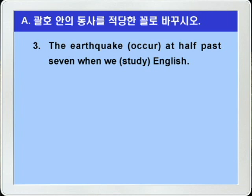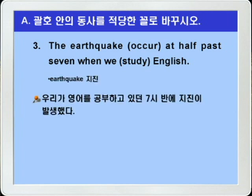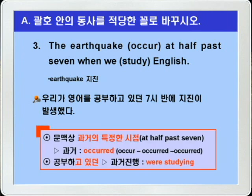3번은 문맥을 따져보고 동사 시제를 정하는 문제가 되겠습니다. 먼저 해석을 해보면, 'The earthquake occurred at half past 7' — 지진이 발생했다, 7시 반에. 'When you study English' — 우리가 영어 공부를 하고 있을 때. 정리를 해보면, 우리가 영어를 공부하고 있던 7시 반에 지진이 발생했다. 이런 말이 되겠습니다. 먼저 occur의 적당한 형태는, 여기에 'at half past 7' — 문맥상 과거의 특정한 시점, 즉 과거를 가리키니까 과거시제를 쓰면 되겠죠. occur의 과거형 occurred.